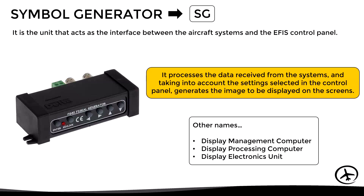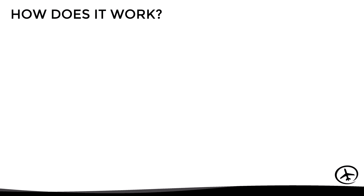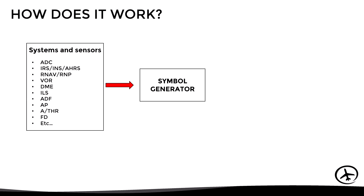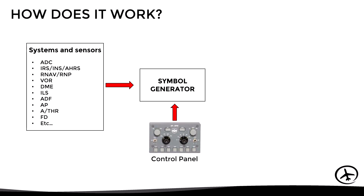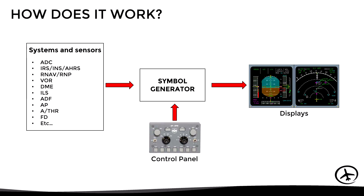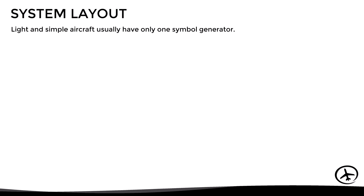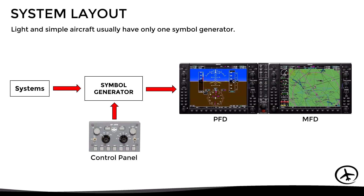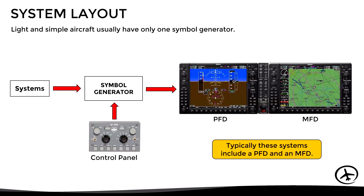Let's see an example of how this unit works. The symbol generator receives the information from the aircraft systems and sensors, which provide all the information that must be displayed to the flight crew. The unit then takes into account the settings selected in the control panel to generate the image to be displayed on each screen. Regarding system layout, light and simple aircraft usually have only one symbol generator, since these systems typically include only one PFD and one MFD.